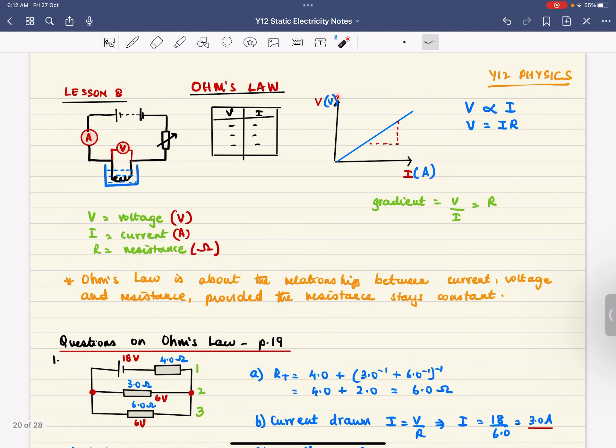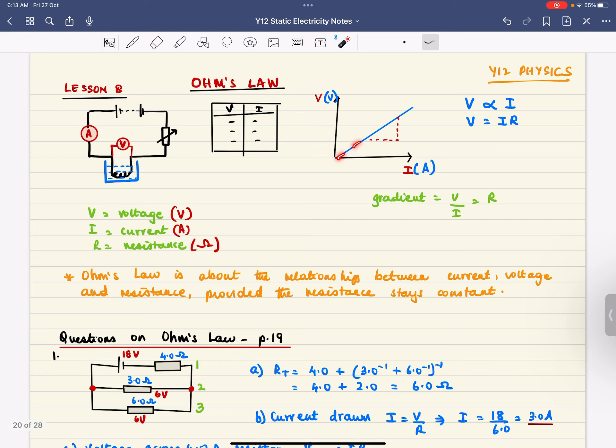And then we drew a graph of voltage against current, and you get a straight line that tells you that when the current increases, the voltage across the resistor increases as well. And the constant of proportionality, which is the gradient of the graph, is resistance.